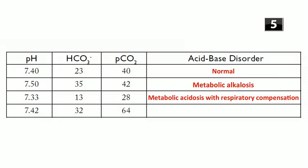Next ABG: pH 7.42 (normal), bicarb 32 (high — suggests metabolic alkalosis), PCO2 64 (high — should lower pH). The pH is normal, but compensation should never completely correct the pH — so this must be a mixed disorder: combined metabolic alkalosis and respiratory acidosis, independently occurring and canceling each other out.